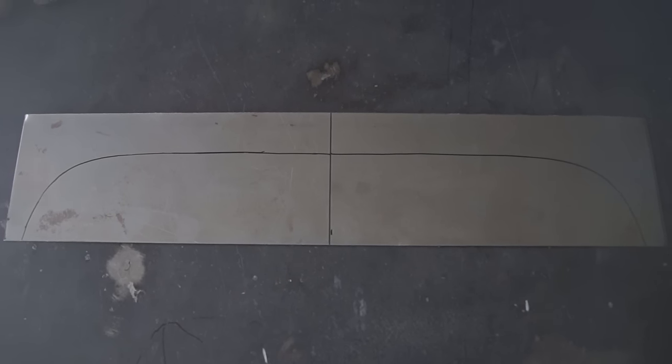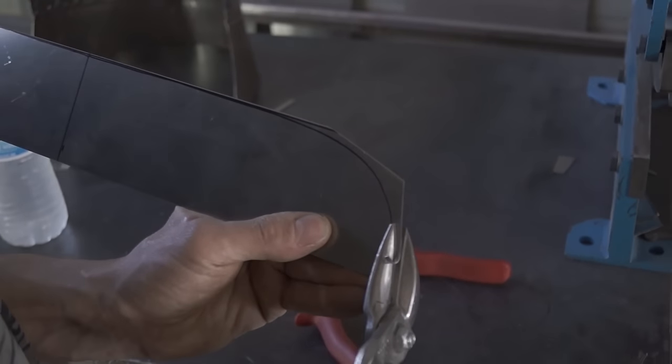Now I'm moving on to the visor. I used a cylinder to rule it and a hammer and shrinker to shape it.